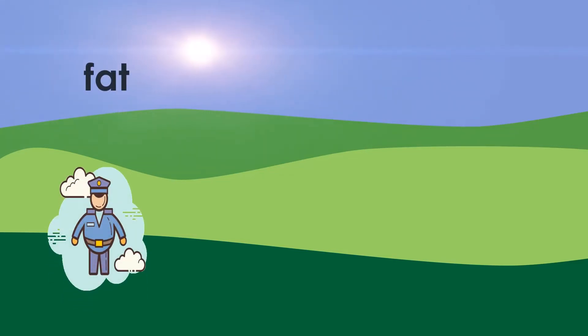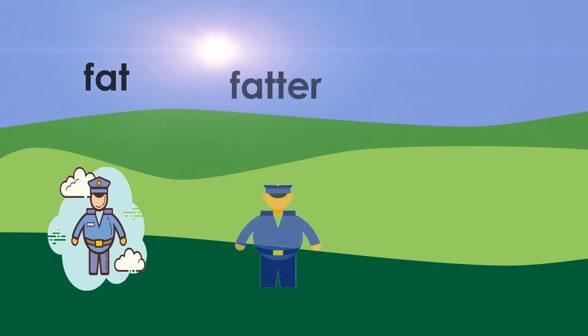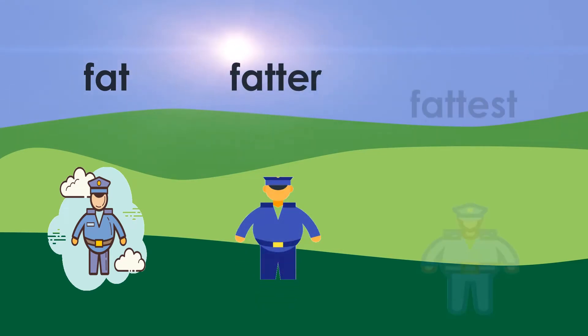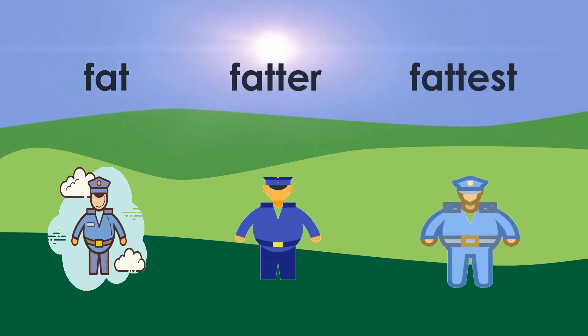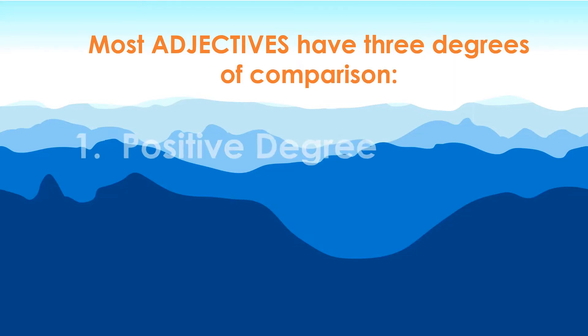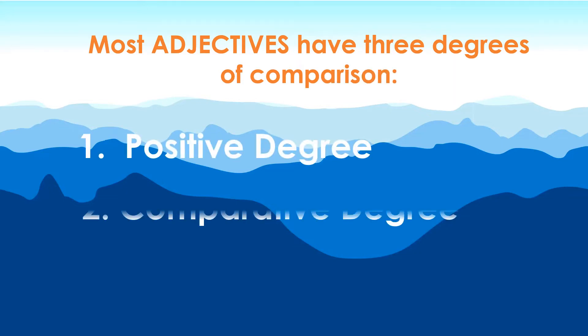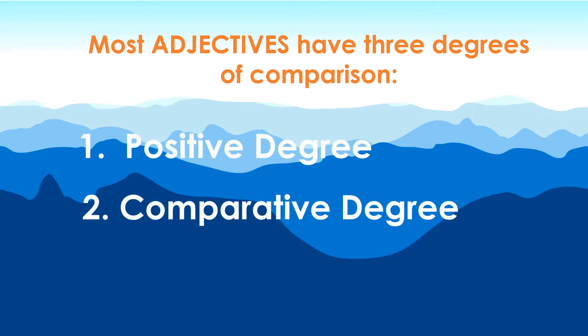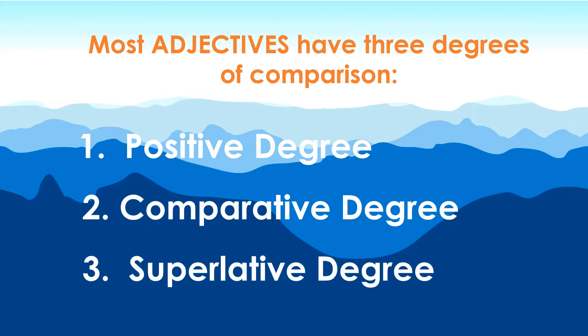There are three degrees of the quality: fat, fatter, and fattest. Most adjectives have three degrees of comparison: positive degree, comparative degree, and superlative degree.